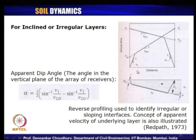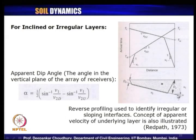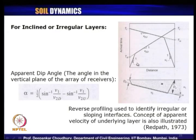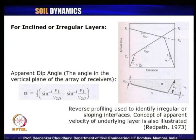What happens if instead of horizontal layers we have an inclined layer? Below the ground we have an inclined layer with thickness d_d on one side and d_u on the other side, and alpha is the inclination of that layer with respect to horizontal. In these cases, you place the source at one point and geophones at two ends. You plot arrival time versus distance for both sides of the y-axis. They will meet at some point, helping us obtain the inclination alpha using the velocities and thicknesses obtained from both directions.